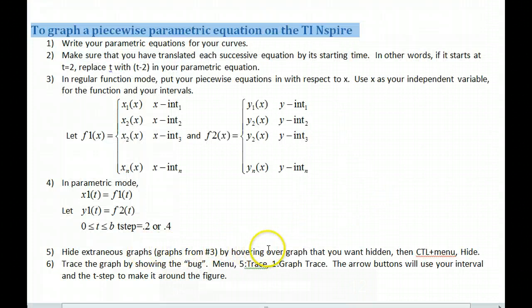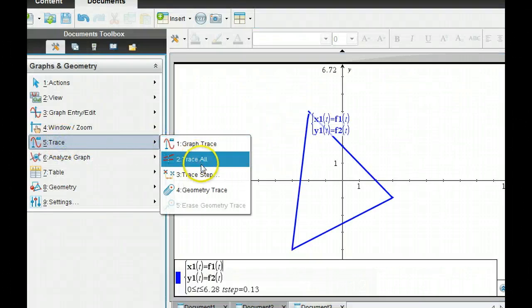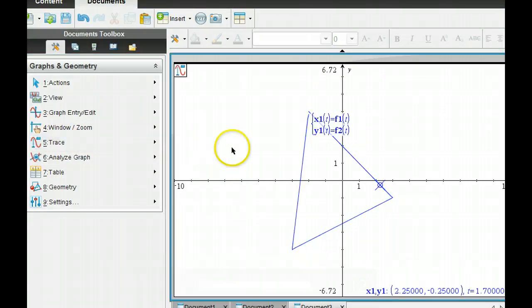And this says how to hide the extraneous graphs. Hover over the graph, and then do control plus menu, and then hide. If you're on your computer, you can use the right click. And then trace the graph by going trace and graph trace. The left and right arrow buttons will help you go up and down for T. So here's trace, and then here's graph trace. And if I go back and forth, here's time zero, and then I can just run around the track.